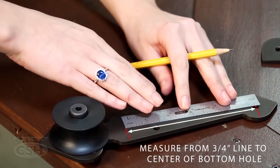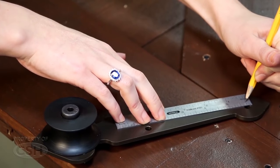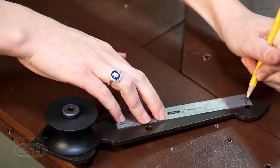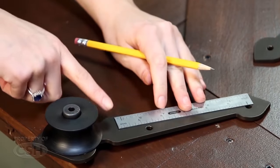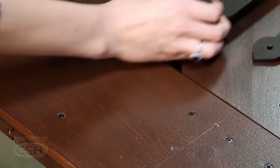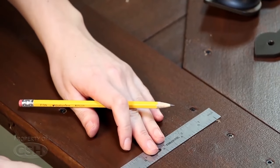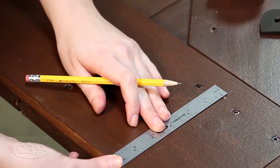Measure from this line to the center of the bottom fastener hole. Transfer this measurement onto the door.